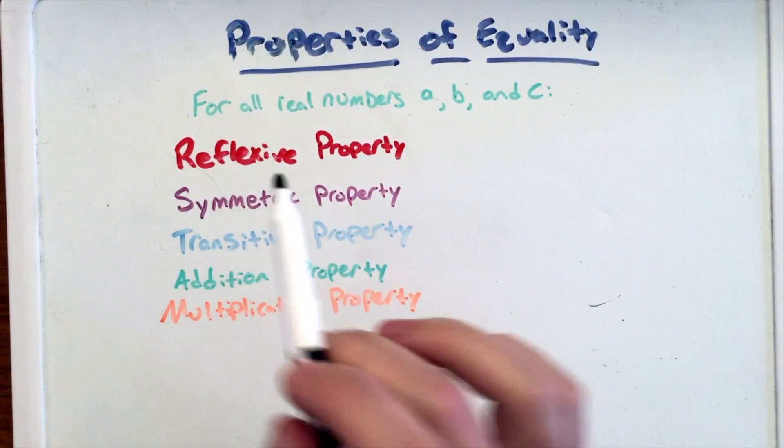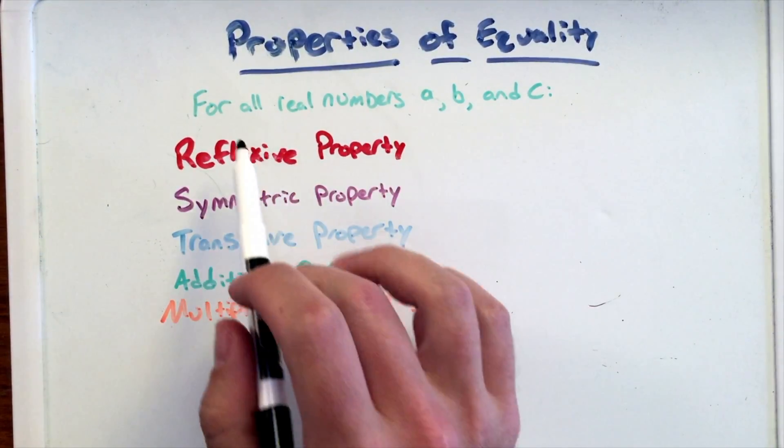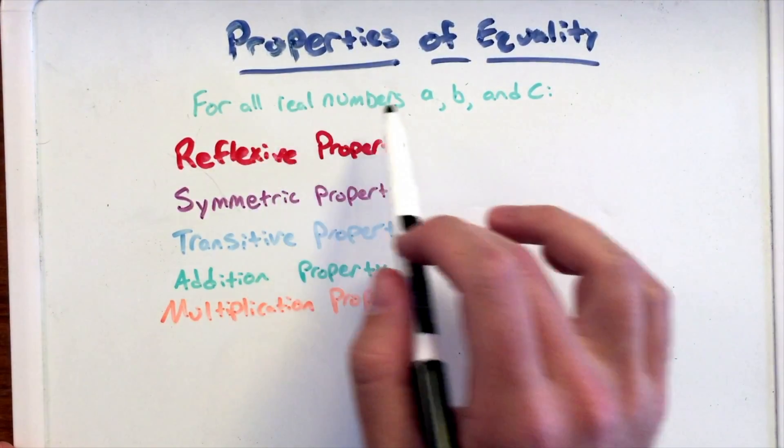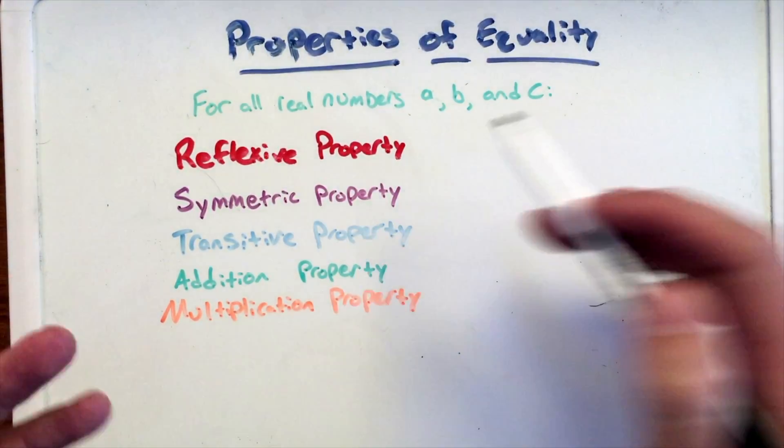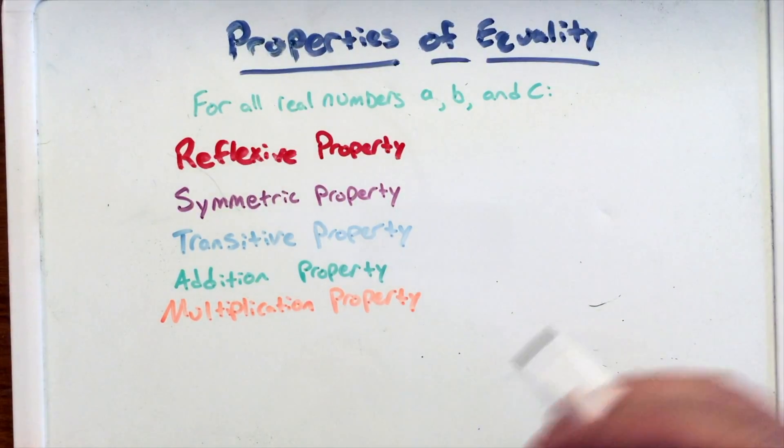But one thing that's important to start off with going over all these properties is for all real numbers A, B, and C. So again, A, B, and C can be any real number that is out there.